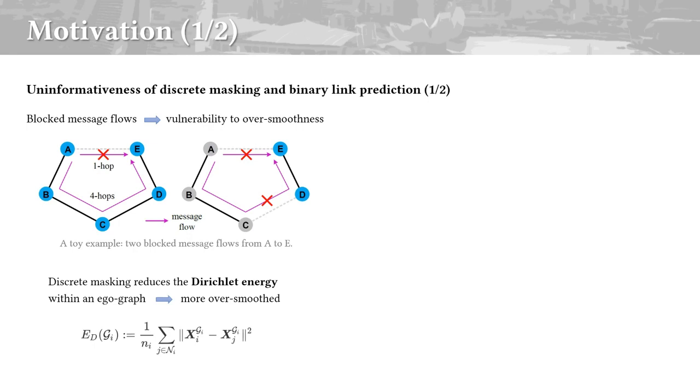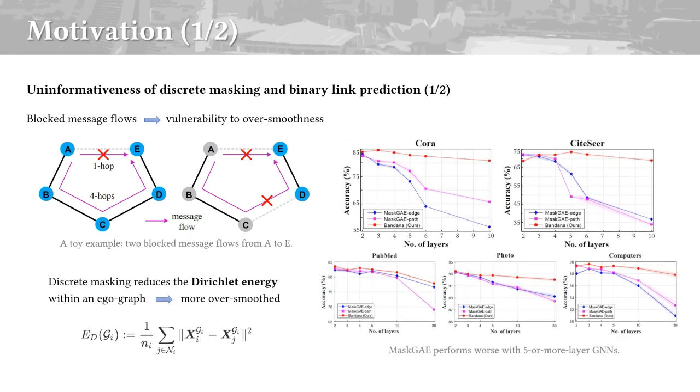Worse still, discrete masking makes the encoder more vulnerable to the over-smoothing problem. From the performance curves on the right, we see that the performance of discrete masking methods goes into a nosedive with five or more layer GNN encoders.